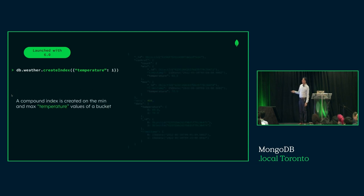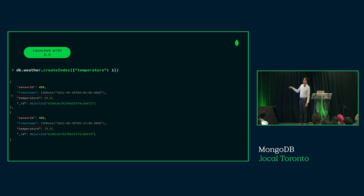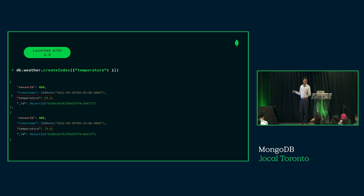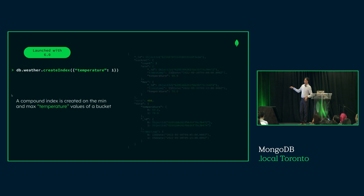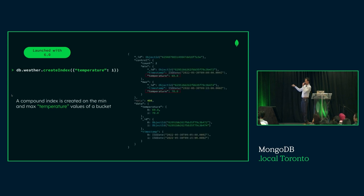New in version 6.0: you can create indexes on measurements. If you want to query something like 'give me all sensors with abnormal temperature above 100 degrees,' you can create an index on the temperature measurement. In that case, we use the summary min and max values stored at the top of each bucket to build the index, rather than indexing individual readings in the array.